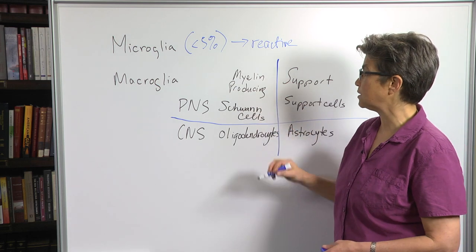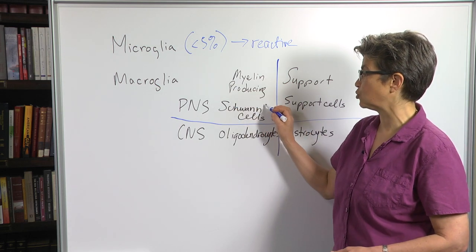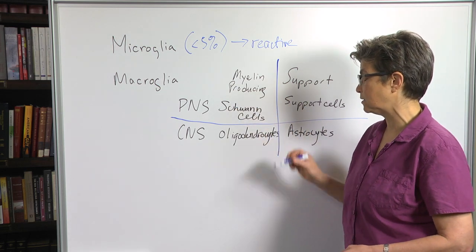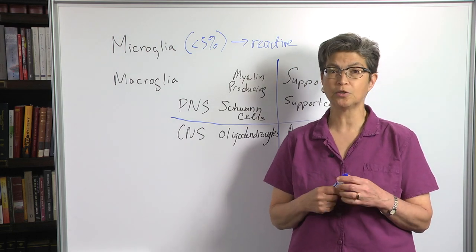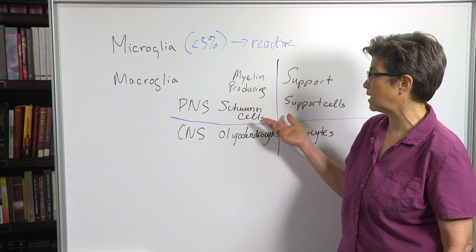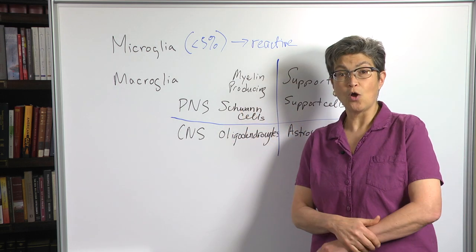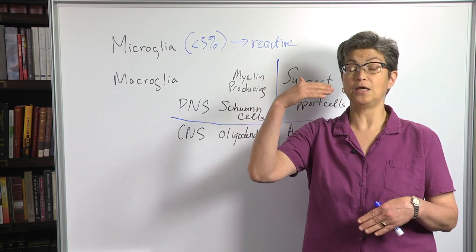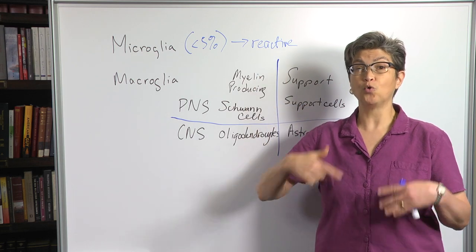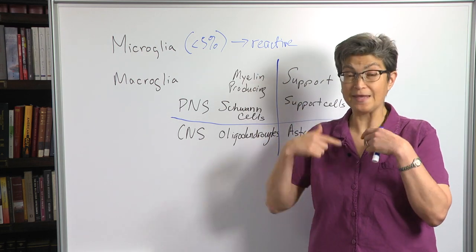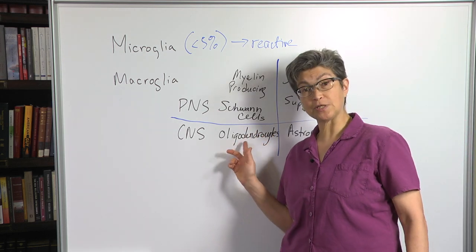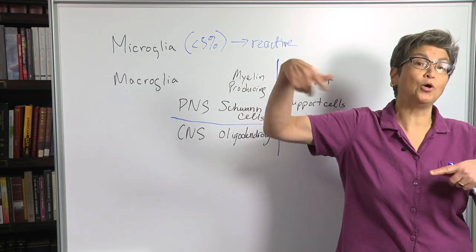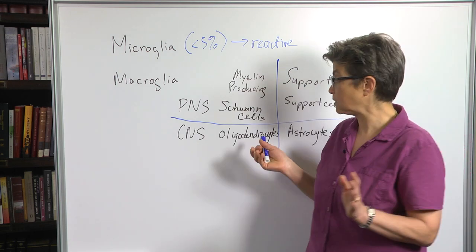So, myelin-producing cells in the periphery, these are Schwann cells, and in the central nervous system, there are oligodendrocytes. They're very similar. There are some differences. For example, Schwann cells, one Schwann cell wraps myelin around one neuron, the axon of one neuron. One oligodendrocyte wraps myelin around multiple axons. So, that's a difference.